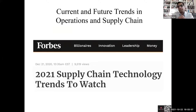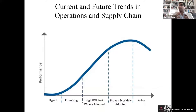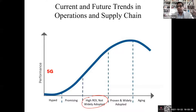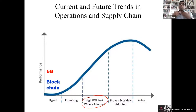Let's start with understanding current and future trends in operations and supply chain. Gartner publishes its hype cycle every year — technologies that are hyped versus those showing high ROI. 5G is one thing that will change a lot in operations and supply chain. Blockchain is not only the future of operations and supply chain but the future of many things — it holds a very special place because we're already seeing many useful applications.